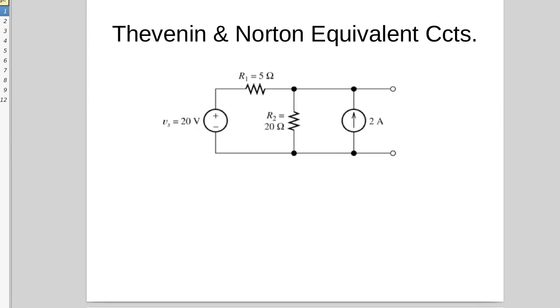In this example we're converting a multiple source system and we're finding the information necessary to create the Thevenin and Norton equivalent circuits. Now compared to the previous example, you might think this is more complicated because it's got two sources, as it turns out this one's rather simple.